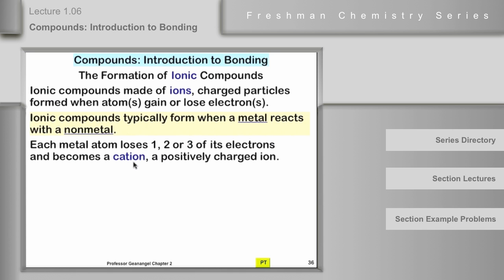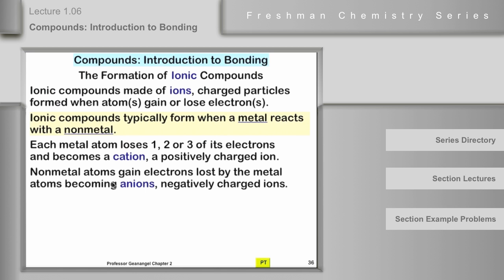Please, not cation. There must be some high school teachers out there who don't have a clue about names or something. But this is a cation. And if the atom, typically nonmetal atoms, gain electrons lost by the metals in this case, they become anions.